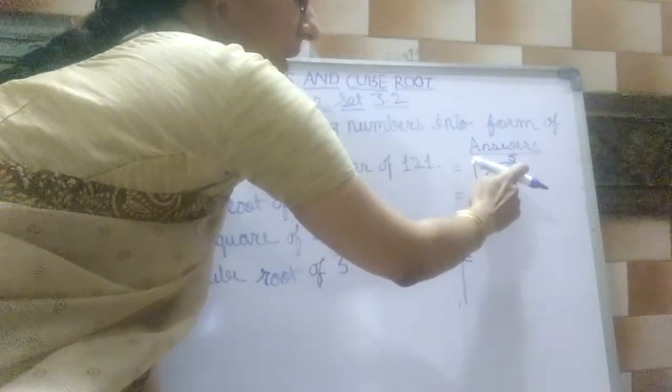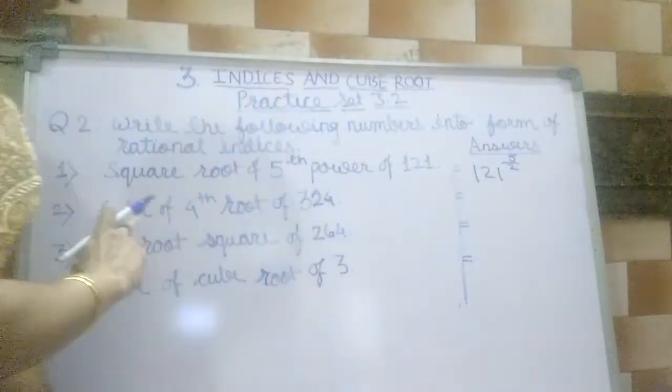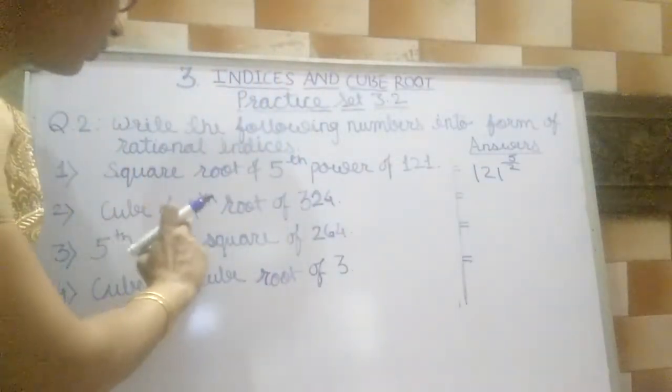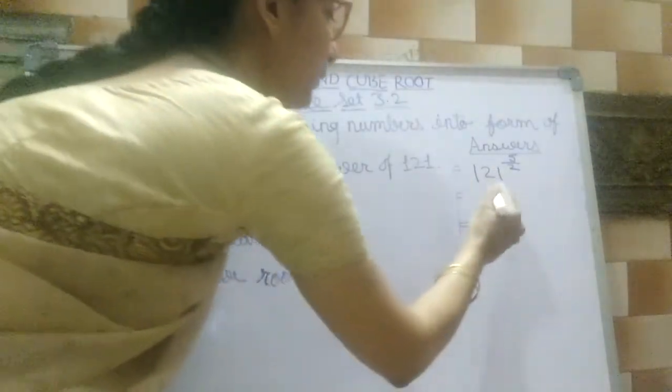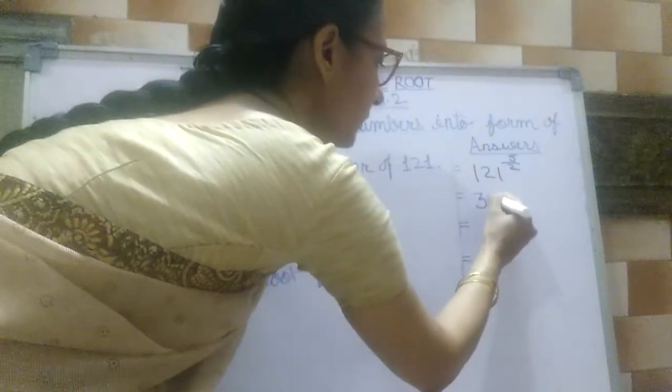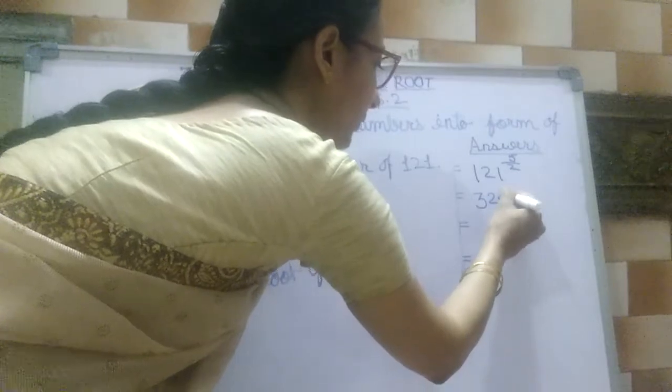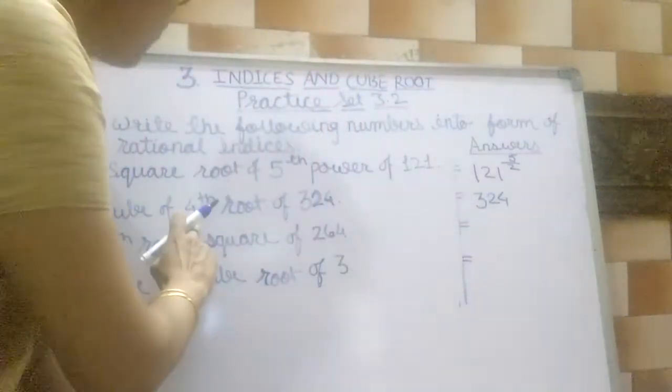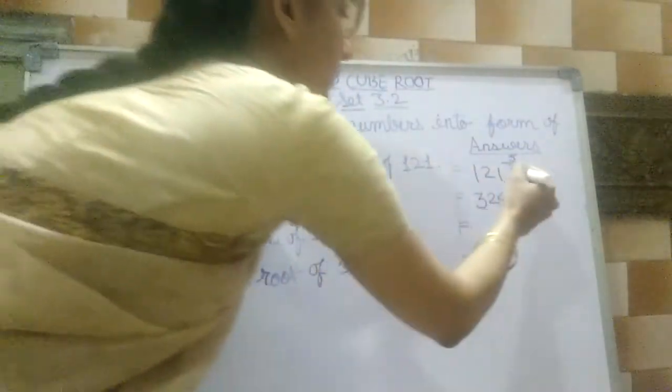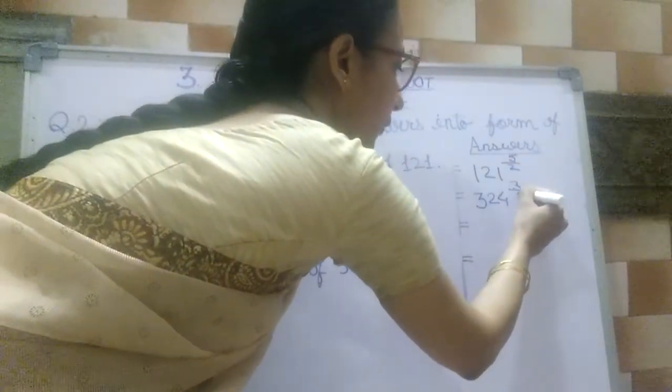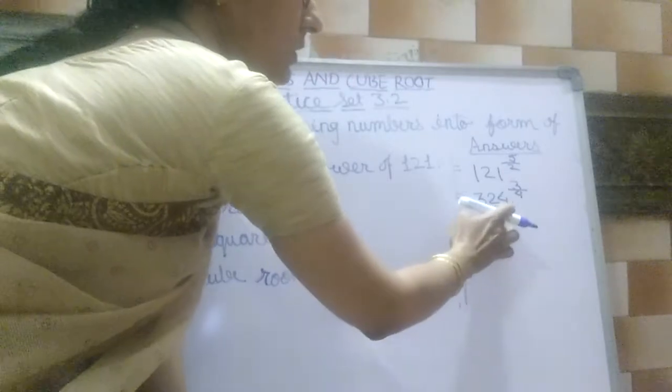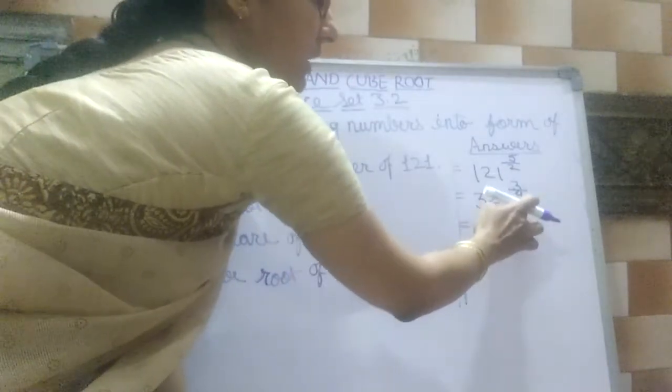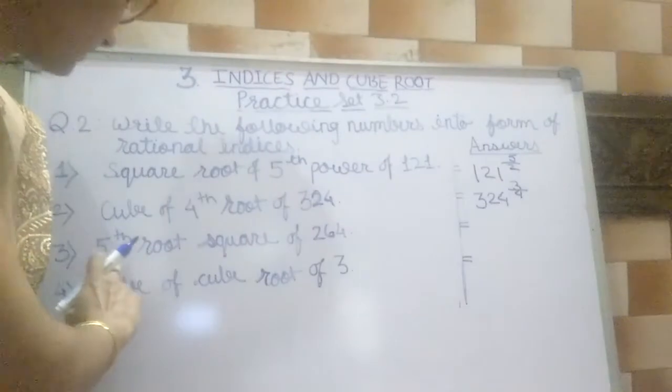The second question is cube of 4th root of 324. Here 324 is our base. Cube of 4th root of 324, so 324 is the base and the index is 3 by 4.